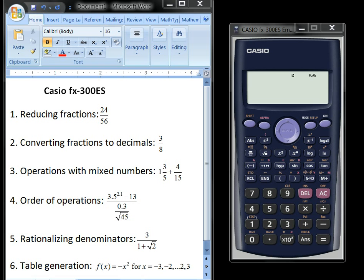This calculator is available at the Lakeland Bookstore and at local Staples, OfficeMax, and Walmarts. The cost ranges anywhere from about $10 to $15.